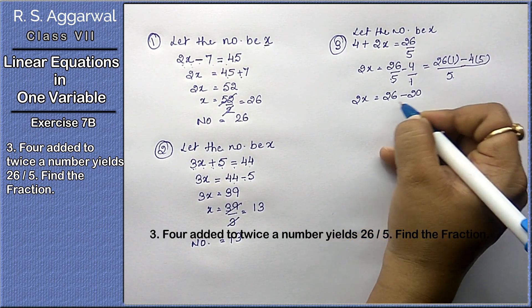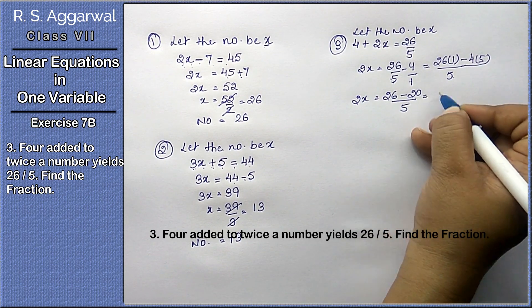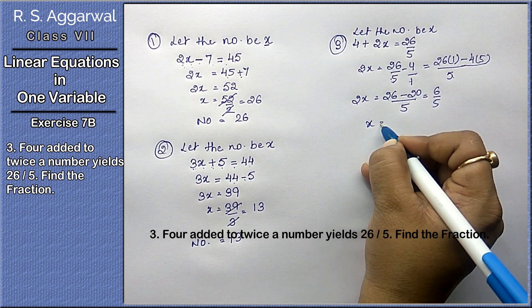26 minus 20 is 6 upon 5. So 2x equals 6 upon 5.